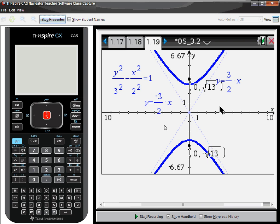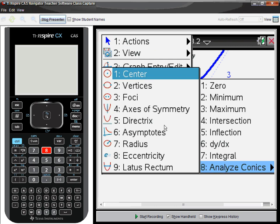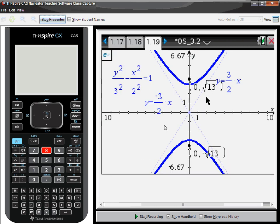And also the eccentricity for that maybe. Menu 6, 8. Eccentricity number 8. Eccentricity is radical 13 over 3.